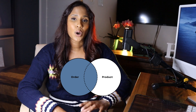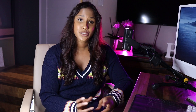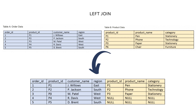The LEFT JOIN selects all data from the left table and brings in matching rows from the right table. So if P4 and P5 exist in the orders table but not the product table, they still appear in the result — but the product columns will be NULL. P6, which is only in the product table, won't appear at all. A left join brings in all rows from your left table and only corresponding rows that match the key in your right table.